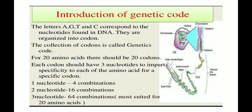Let's look at the introduction of the genetic code. The letters A, G, T, and C correspond to the nucleotides found in DNA. They are organized into codons. The codon is encoded as a genetic code, and the collection of codons is called the genetic code.